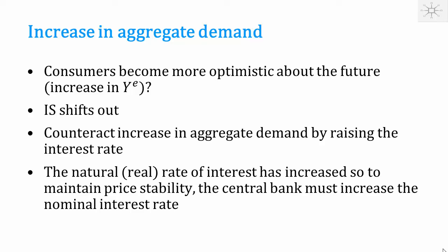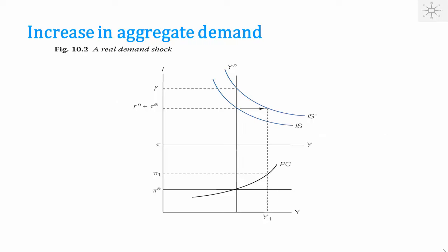That means the IS curve is going to shift out — production will be higher for a given interest rate. If you keep the interest rate constant at the original level, there will be higher production and higher inflation. If you want to stabilize inflation and production, you want to raise the interest rate to I-prime, so as to bring production back to the natural level and inflation back to the inflation target. You want to raise the interest rate to counter the shock in aggregate demand.